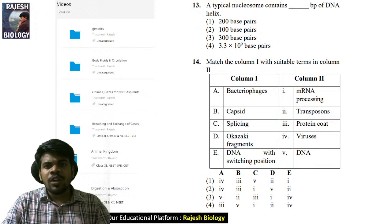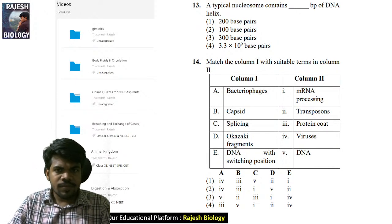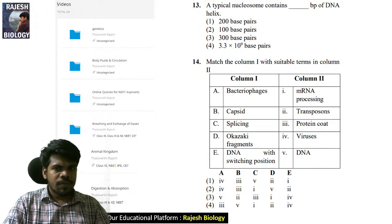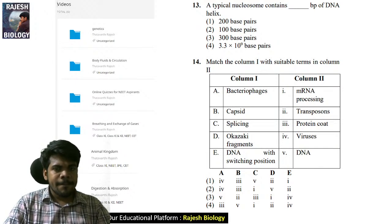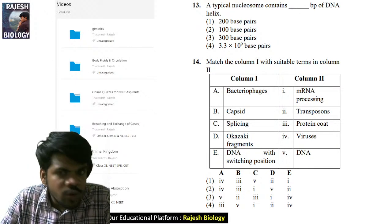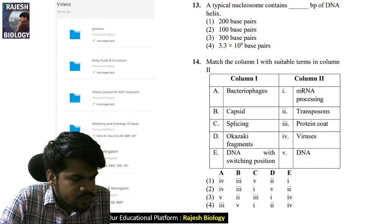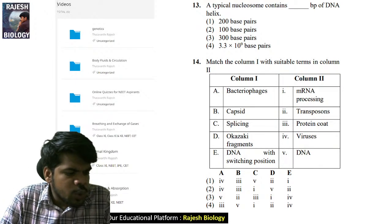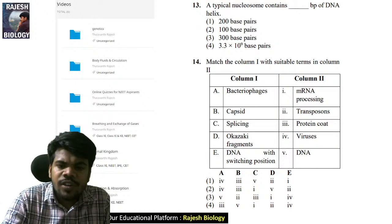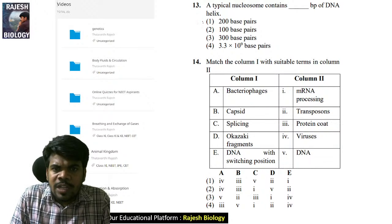Question 13: a typical nucleosome contains how many base pairs of DNA helix? One nucleosome contains how many base pairs? The right answer is 200 base pairs. Jnaneshwari, Dinesh, Jetta, Aparna, and Chandrika are all correct.